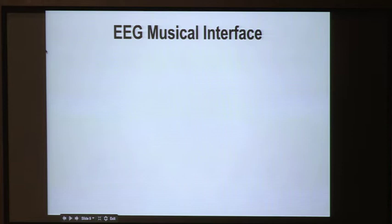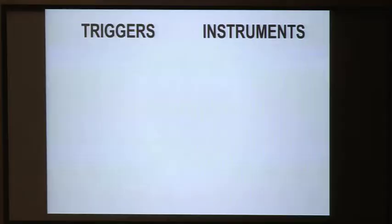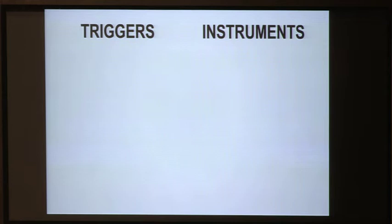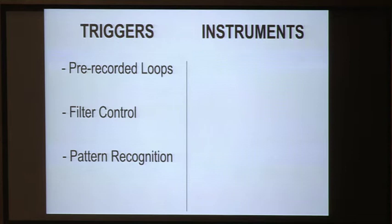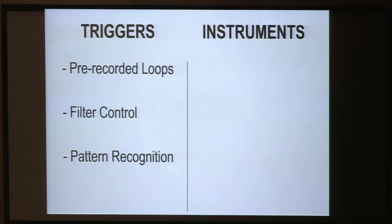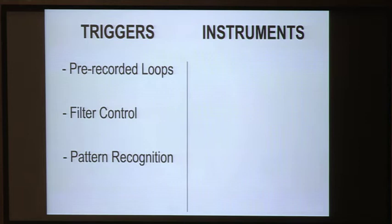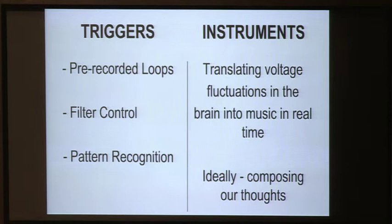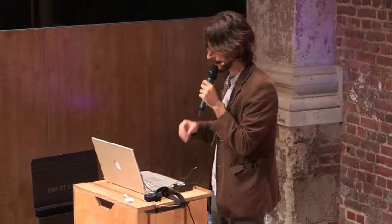I make a distinction between what I call triggers and instruments. Most existing brainwave-to-music technology is about triggers — using the EEG signal to trigger pre-recorded loops, control filters, or send pre-determined audio output using pattern recognition. An instrument, in this context, I define as translating voltage fluctuations in the brain into music in real time, so what you hear is directly created by your brainwaves. Ideally that means composing our thoughts — hearing what we're thinking — but we have a long journey ahead.